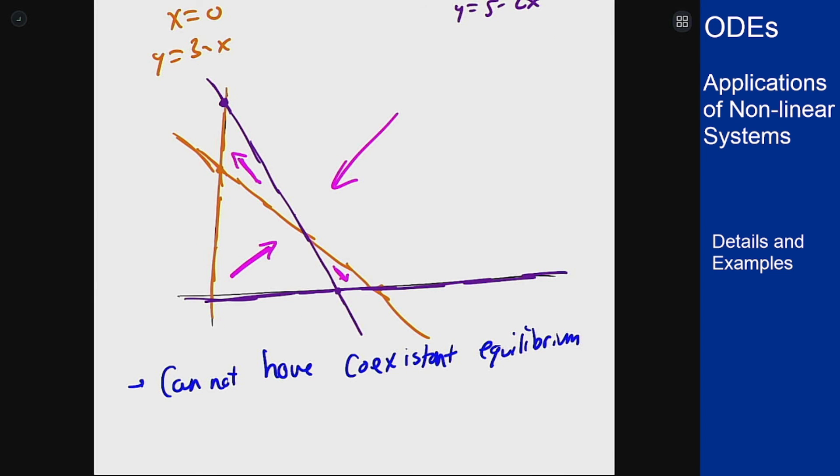So all those effects are going to indicate that for this situation we cannot have a co-existent equilibrium. Or in a more mathematical context that solution where the equilibrium would be is unstable so it's not going to be something we converge to something that if we're nearby we're running away from it to get to one of the other points.